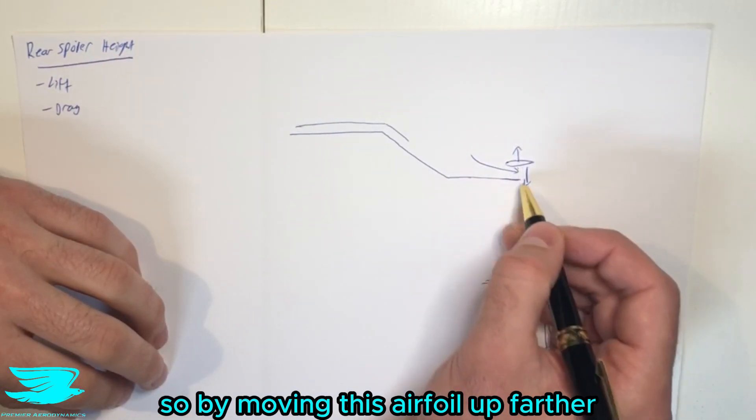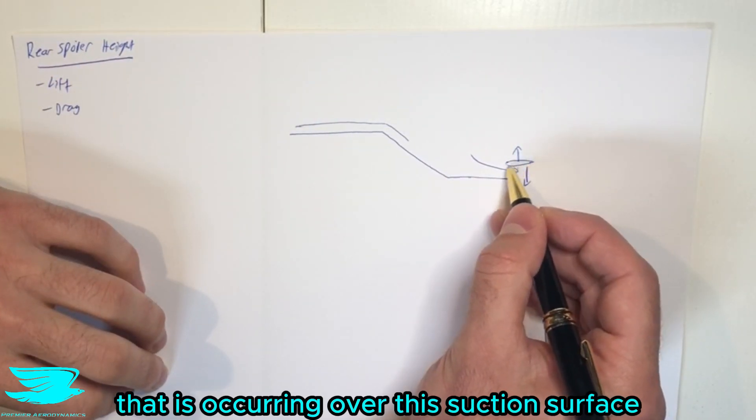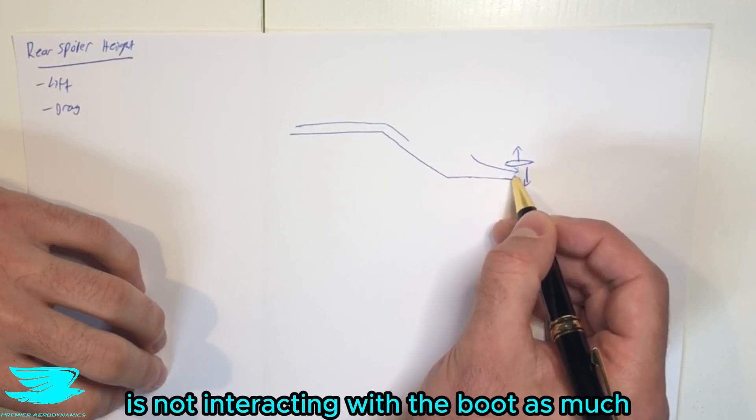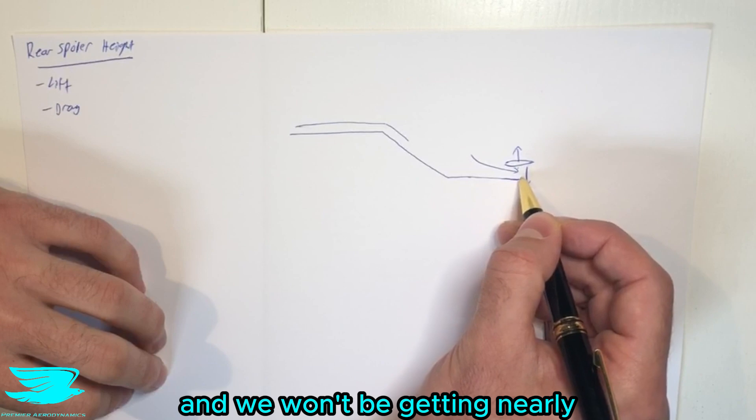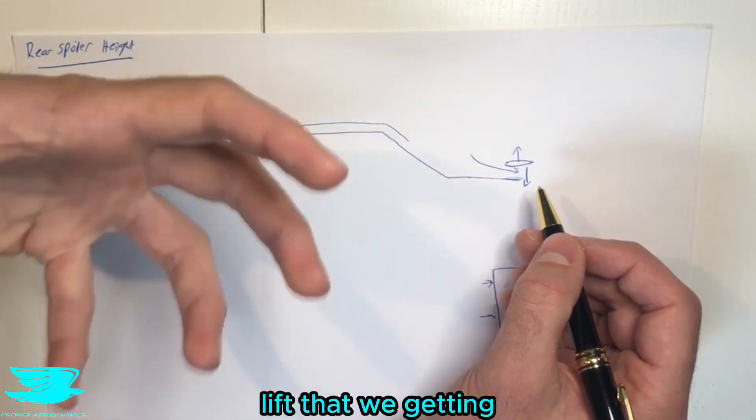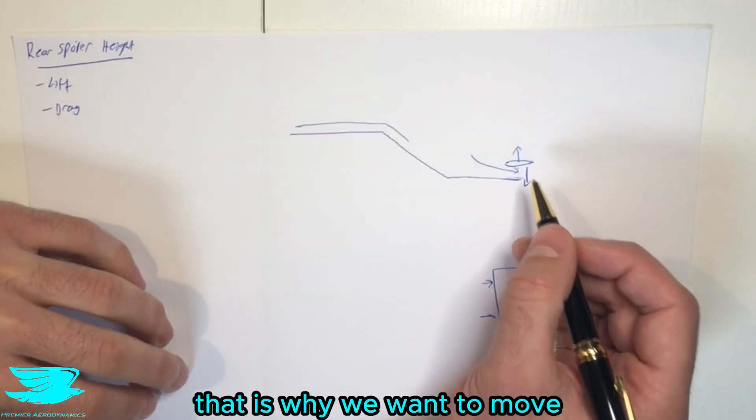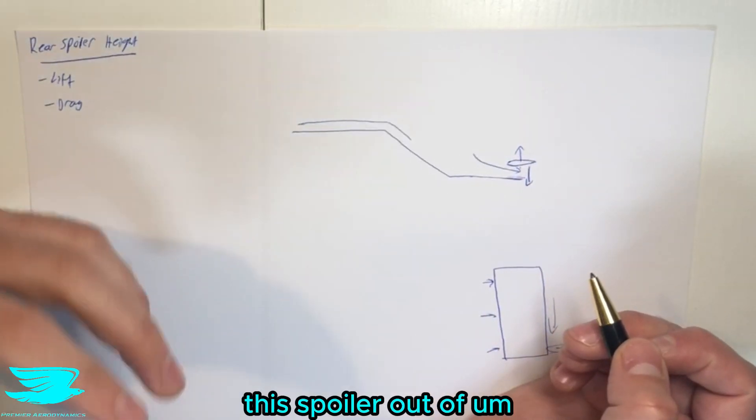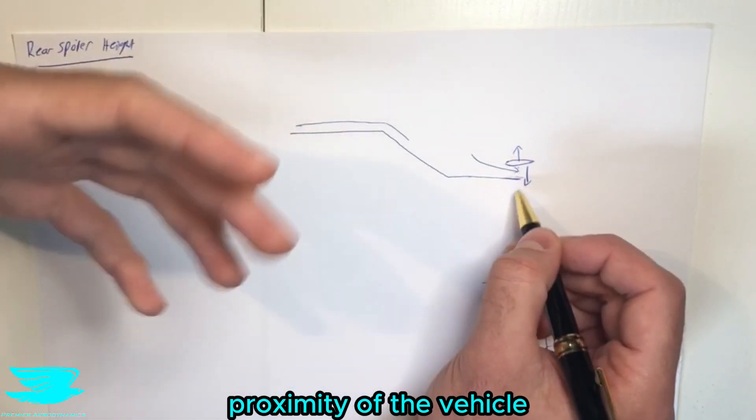So by moving this airfoil up further, the low pressure that is occurring over this suction surface, the underside here, is not interacting with the boot as much, and we won't be getting nearly as much low pressure here and cancelling out some of the downforce. So that is why we want to move this spoiler out of the proximity of the vehicle.